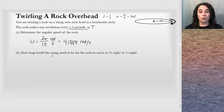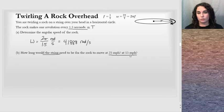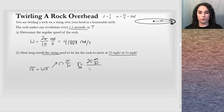The second part asks how long the string would need to be for the rock to move at 25 miles per hour or 15 miles per hour. We're asking for the length of the string, which means we need the radius. Given a linear speed and an angular speed, we relate them with v equals omega times r. Solving for r gives v over omega. For 25 miles per hour: r equals 25 mph divided by 4.1888 radians per second.